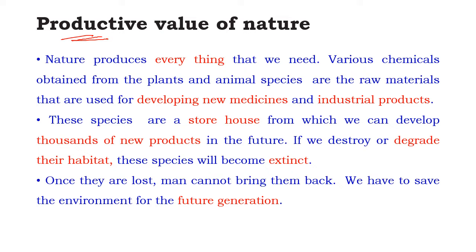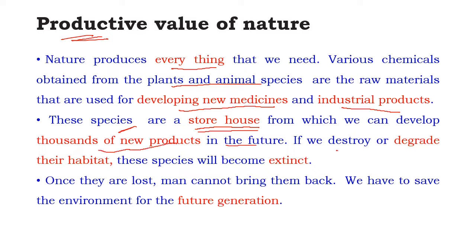Nature has various values. The first is the productive value of nature: the nature produces everything we need. Various chemicals obtained from plants and animal species are raw materials used for developing new medicines and industrial products. These species act like a storehouse from which we can develop thousands of new products in the future. If we destroy or degrade their habitat, these species will become extinct and once they are lost, they cannot be brought back.